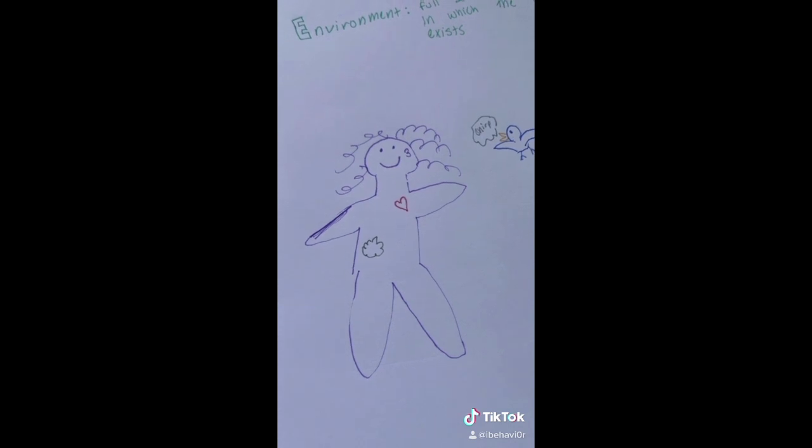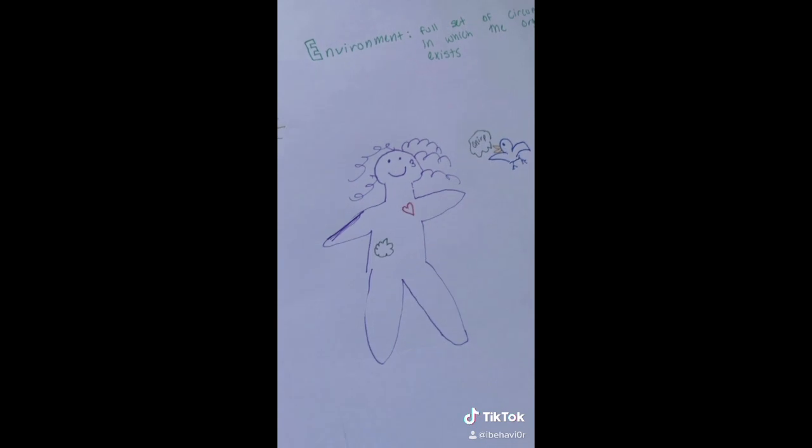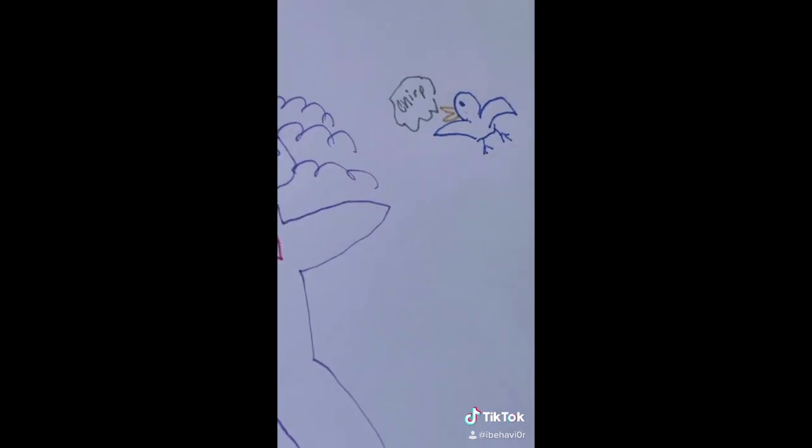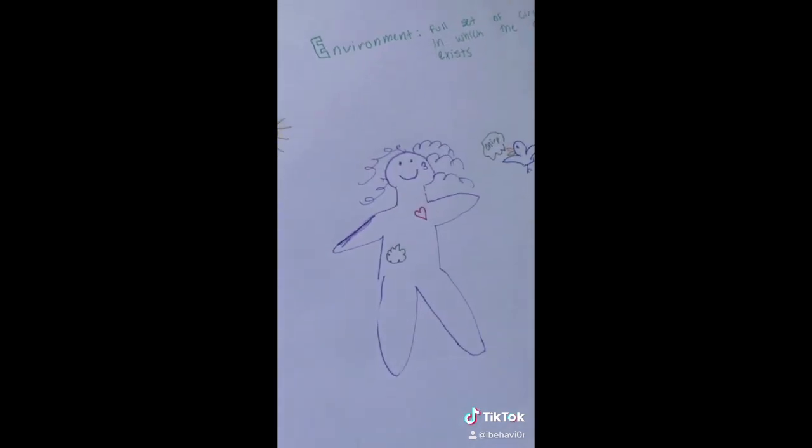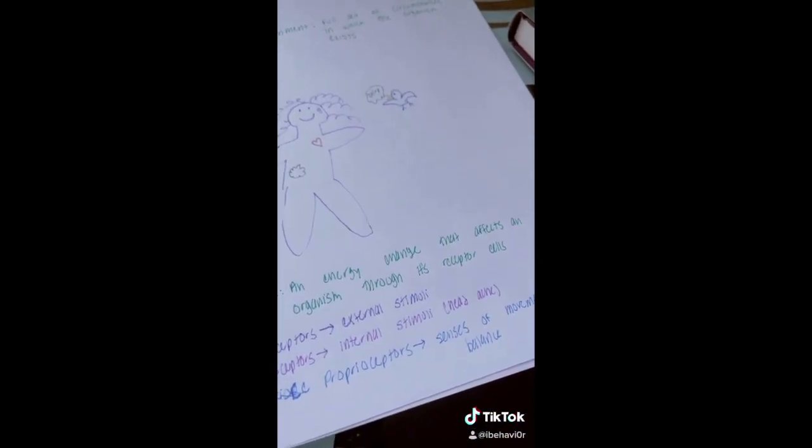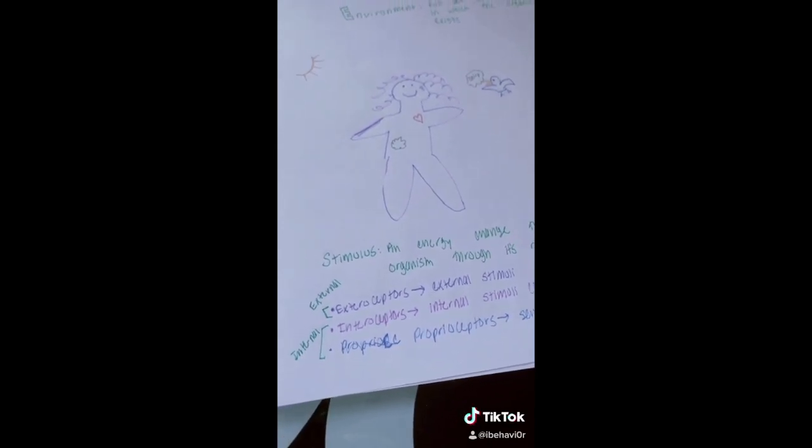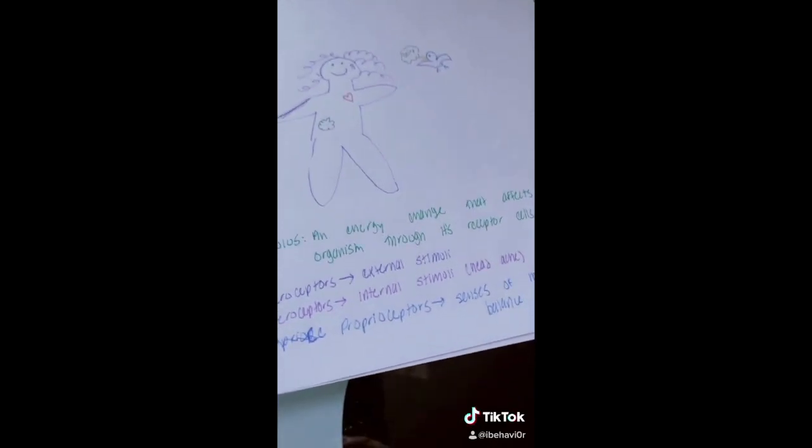Something to note here is that the environment is complex and constantly changing, differing from moment to moment. In the next few videos we're going to go over what stimuli are in the environment. A stimulus is an energy change that affects an organism through its receptor cells.